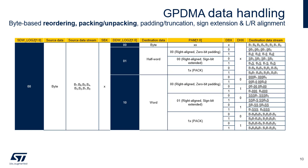If DBX equals 1 and the destination data width is not a byte, the two bytes are exchanged within the aligned post-PAM half words. For instance, the byte 7, byte 6 half word becomes the byte 6, byte 7 half word. If DBX equals 1 and the destination data width is neither a byte nor a half word, the two aligned half words are exchanged within the aligned post-PAM words.